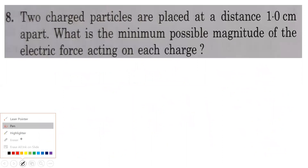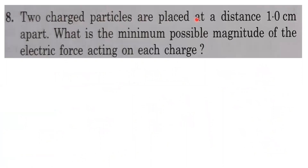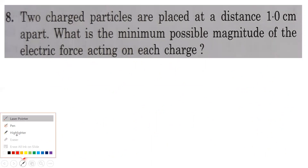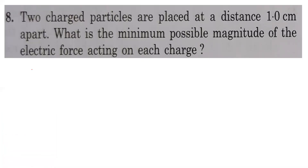Next problem: two charged particles are placed 1 centimeter apart. What is the minimum possible magnitude of electric force acting on each charge? The distance is 1 cm = 10⁻² m. Minimum force requires minimum charge, which is the elementary charge e = 1.6×10⁻¹⁹ C (charge of electron or proton).